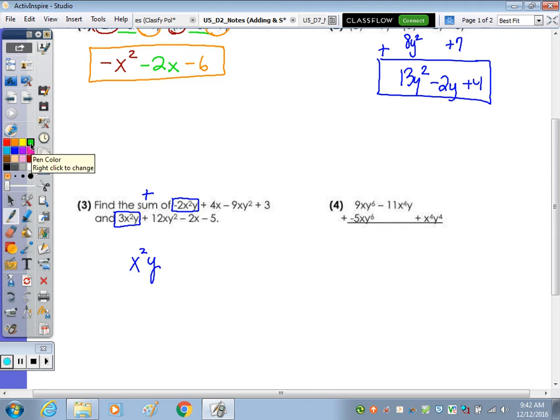Next term, I'm going to do the xy squared, so I'll use a circle for those. xy squared, xy squared, including the sign in front, and 12 minus 9 is a positive 3 xy squared. The x's I'll just underline. Positive 4x and negative 2x would be a positive 2x. And then last, the numbers that aren't underlined, boxed or circled, negative 5 plus 3 is a negative 2.